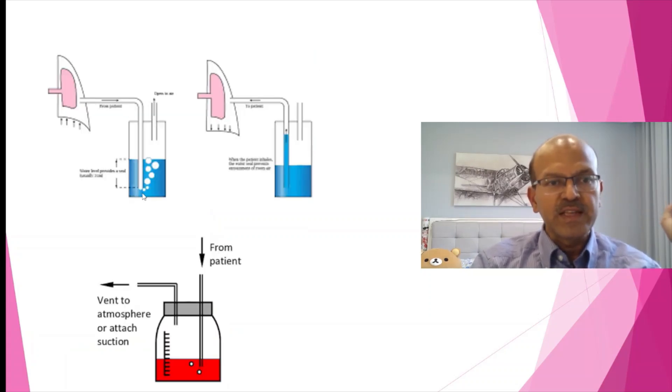This is how it looks. The chest drain connects to this tubing which is immersed in the water. The air bubbles through. By immersing it in water, you are avoiding a reverse flow of air into the chest. So when the negative pressure in the chest increases, air can be sucked in through there, so you are avoiding that. And this is opening either to the exterior or you connect this to a suction.